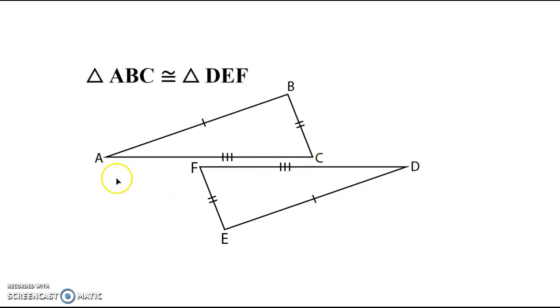In this case, we have triangle ABC and triangle DEF. You can see based on their markings you could prove side-side-side that these two triangles are congruent. So we know they're congruent - what do we do from here?